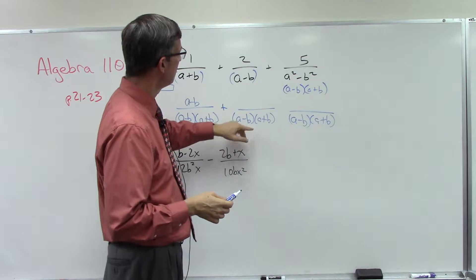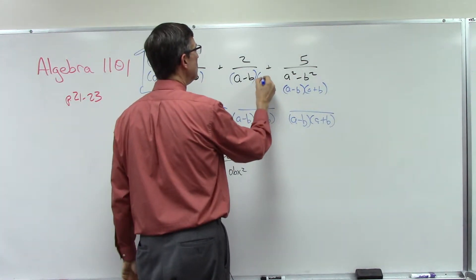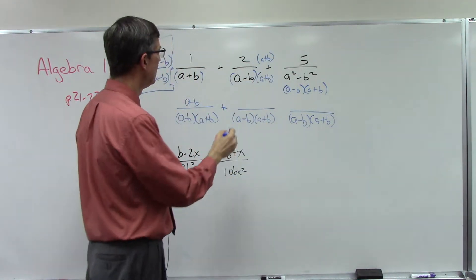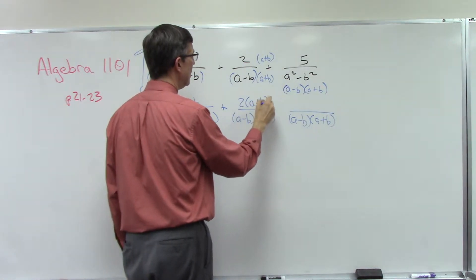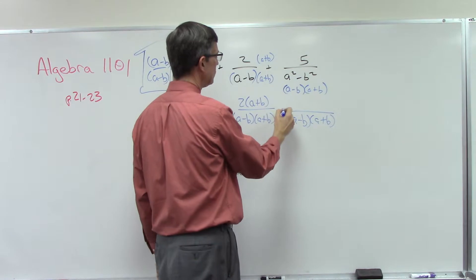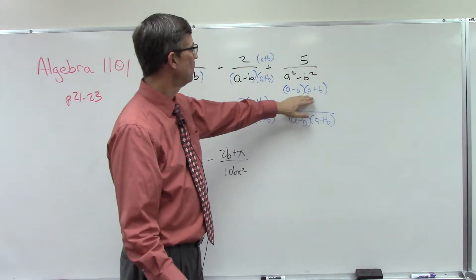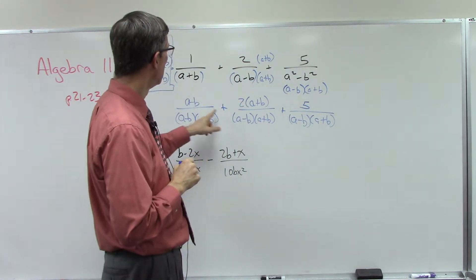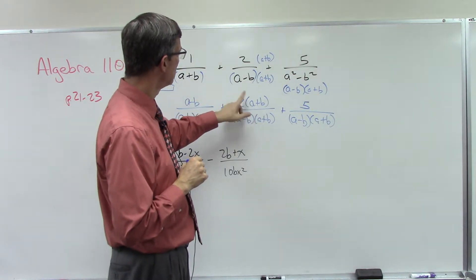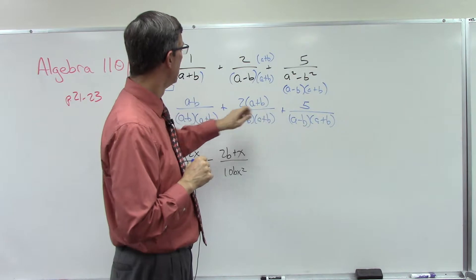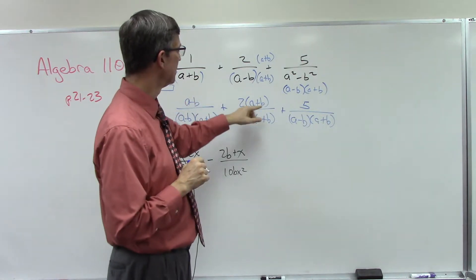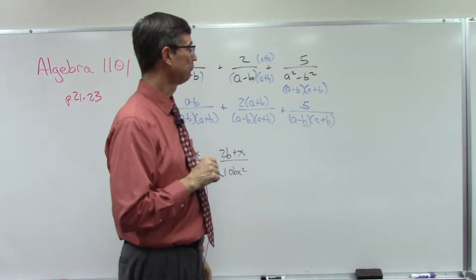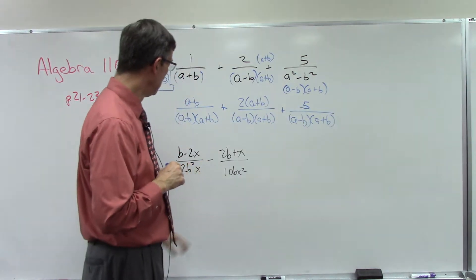Here I have the (a minus b) but I'm missing the (a plus b), so I'm going to multiply (a plus b) on the bottom and (a plus b) on top. Then this one already has the common denominator, so all I need is the five. Now, are we done? Not quite — I'm going to let you finish it. We need to distribute the two times a and two times b, then add the like terms, because now they all have the same denominator.